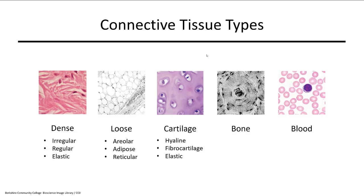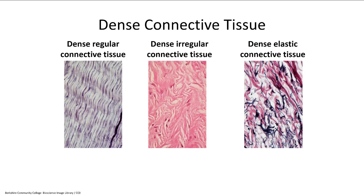There are several types of connective tissue: dense, loose, cartilage, bone, and blood. Dense connective tissue has three subtypes. Dense regular connective tissue has collagen fibers aligned in a row, visible as a striped pattern, like pencils stacked together. It forms tendons and ligaments and is our strongest connective tissue because all fibers line up in one direction for maximal pulling force. It is also layered throughout our muscles.